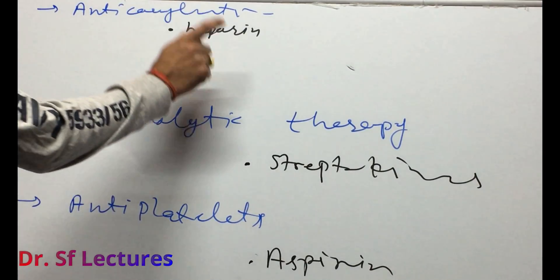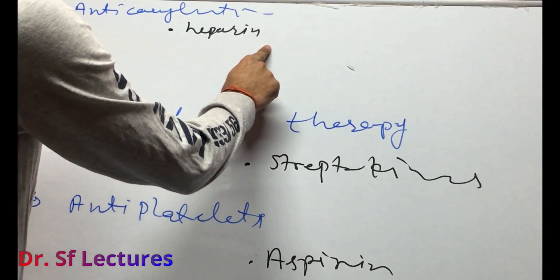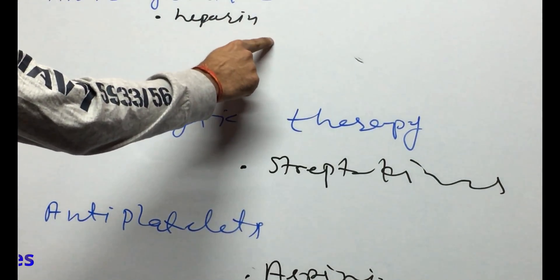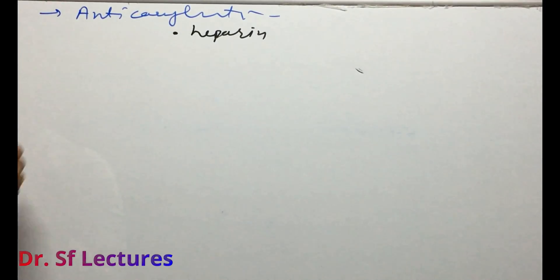Anti-coagulation drugs: in anti-coagulation drugs we can use heparin. If heparin toxicity increases, then we can also use protamine sulfate.